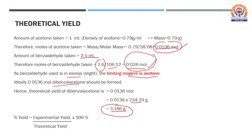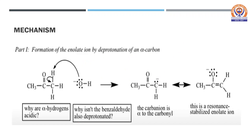Seldom in a reaction do we get the exact theoretical yield because of various factors. The experimental yield obtained is always less than the theoretical yield, and hence the percent yield can be calculated by dividing the experimental yield by the theoretical yield and multiplying by 100.